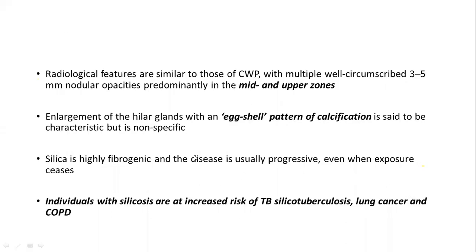On chest X-ray, similar to coal workers' pneumoconiosis, the predominantly affected zones are the mid and upper zones. A typical chest X-ray finding is the eggshell pattern of calcification. Since silica is highly fibrogenic and the disease is progressive even after exposure ceases, the patient has risks of developing lung cancer in the long run. Individuals with silicosis are at increased risk of tuberculosis — also known as silicotuberculosis — lung cancer, and COPD.